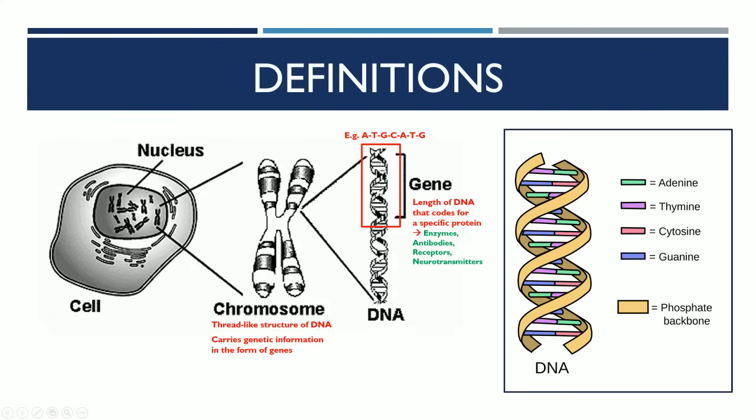Let's take a look at a couple of definitions. Inside our cells, we have something called the nucleus that contains genetic information. Specifically speaking, it contains chromosomes which are thread-like structures of DNA, and the DNA itself carries genetic information in the form of genes.